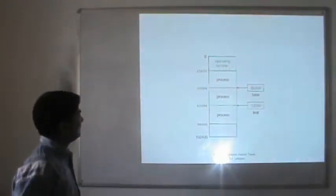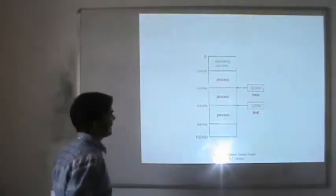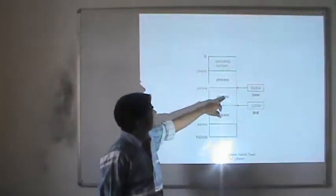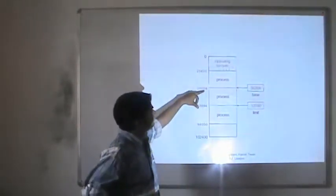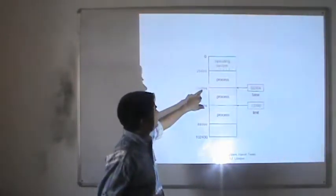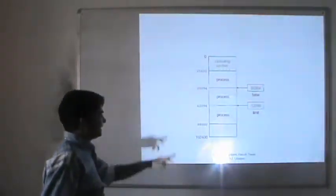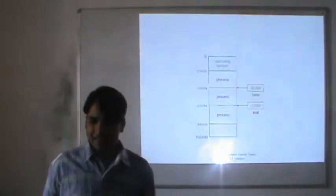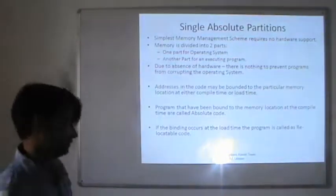The same example can be shown using a diagram. You can see the addresses for any process starting from 300040, and the limit register value is 120900. These are the legal addresses that can be generated for that process.